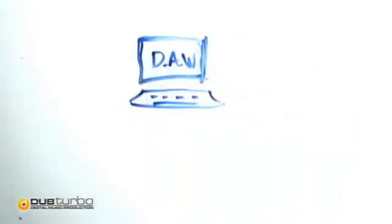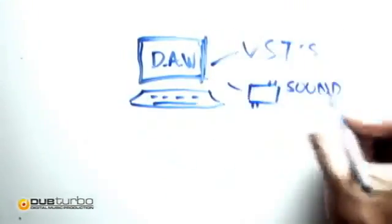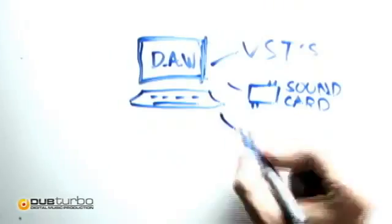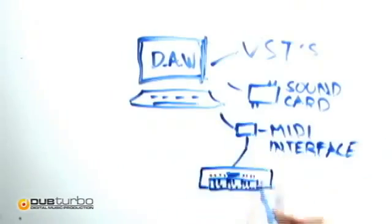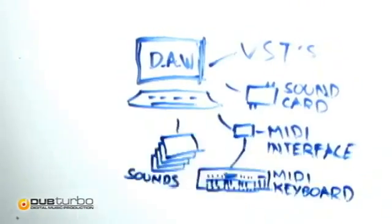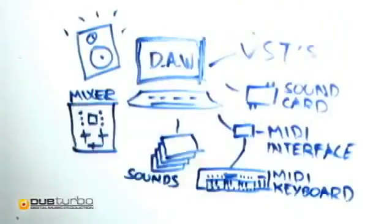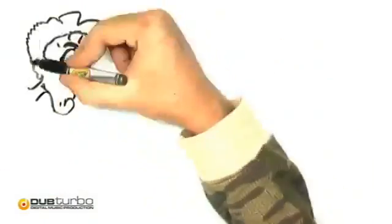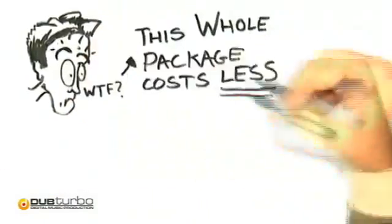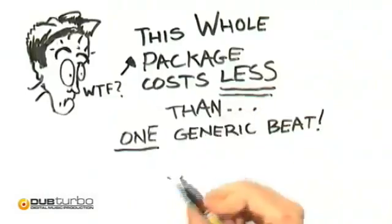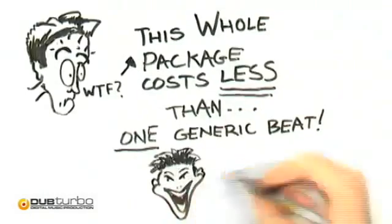Why? What used to cost thousands — meaning a supercomputer, big name DAW software, VSTs, pro sound card, MIDI interface and keyboard, samples and kits, monitors, a mixer, wires, and more — is now all available for less than the cost of just one average royalty-free beat or kit.